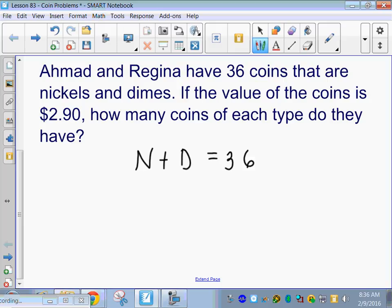Now, the second equation is the value. The value of the money. How much is every single nickel worth? 5 cents. How much is every dime worth? 10 cents. And we have $2.90.